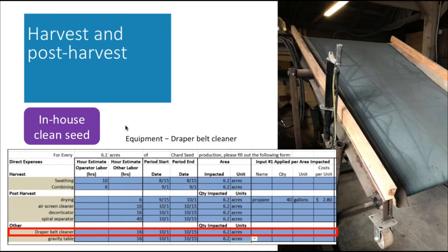A draper belt cleaner — for beets and chard, we have a lot of vetch in our fields because we cover-crop heavy with rye and vetch. Vetch is one of the hardest things to get out of beets and chard seed because the outer diameter of the vetch is the same outer diameter as a decorticated chard seed. This is just a rotating draper belt where you can adjust the angle and the speed. You set your angle and speed so the chard seed gets carried up and the vetch seed — perfectly round like a little metal ball bearing — rolls back down. We built it in the shop in the winter, about 40 to 50 hours of tinkering — it saved us a ton of labor.